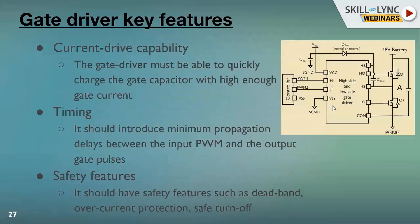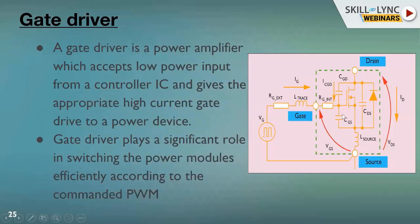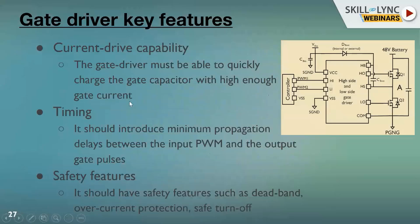The key features expected from a gate driver are: first, it should have enough capability to quickly charge the gate capacitor — for example, Cgs is the gate capacitor — so the gate driver needs to quickly charge this gate capacitor with a high enough gate current, meaning it should have good current drive capability. Second, timing: it should introduce minimum propagation delays between the input PWM and the output gate pulses — both should be in phase, because any propagation delay between input and output violates the commanded PWM.